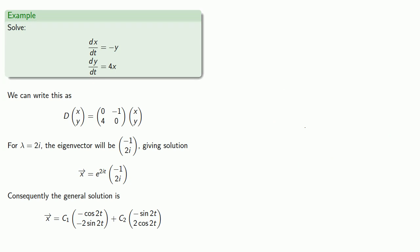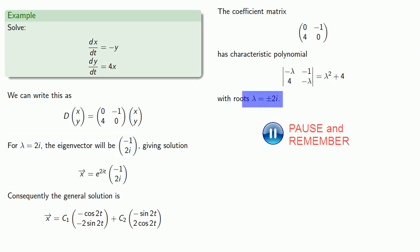Remember that this was just for the eigenvalue lambda equals 2i. There was another eigenvalue, lambda equals minus 2i. And that should give us another solution.